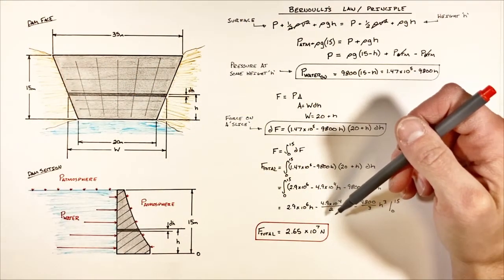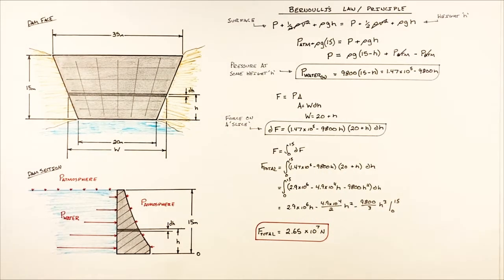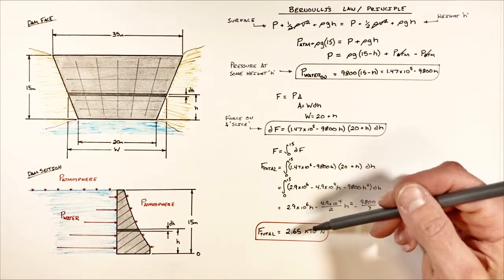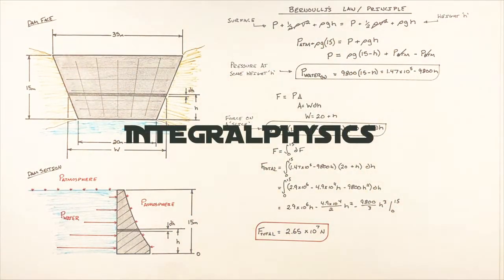And we find the total force against the entire dam face is 2.65 times 10 to the 7th newtons. So this has been how to solve for the total force acting against a non-uniform dam, and on that note, that's all for now.